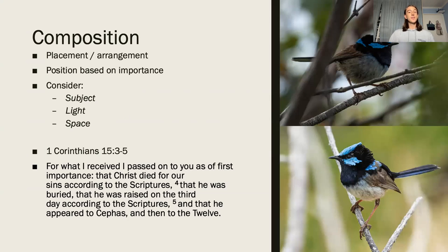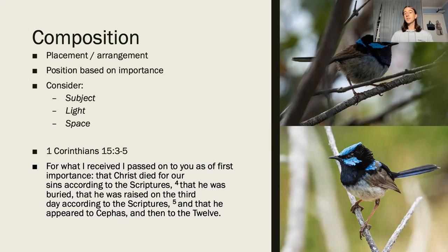There are many different uses for the word composition, but the relevant definition for photography is the artistic arrangement of the parts of a picture. A picture needs to be arranged such that the most important element — the subject — is appropriately emphasized. Depending on the scene, different elements need to be manipulated in order to reduce or increase their prominence.